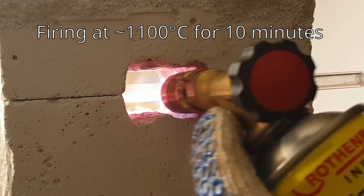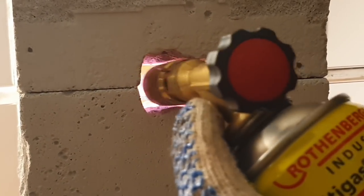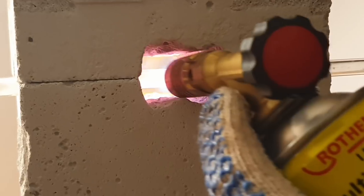Firing is done with the MAP gas torch and lasts around 10 minutes. The material shall glow yellow during the firing.